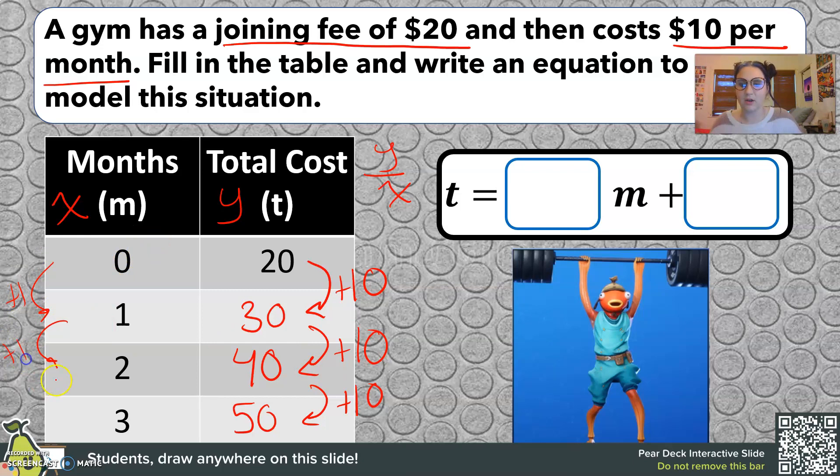So that would be a slope of 10 over 1. We know how to find that from a table. We also can just look at our problem and say $10 per month. So that means we're going to multiply $10 times any amount of months to find out how much it is. So over here, we can fill this in with 10. Again, our t is also kind of like our y value, and this m is like our x value.